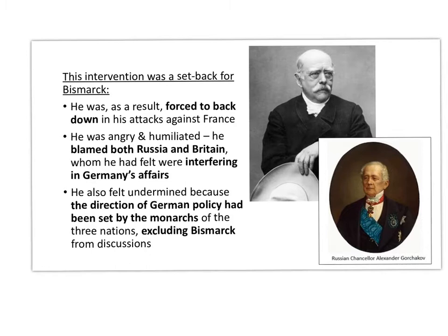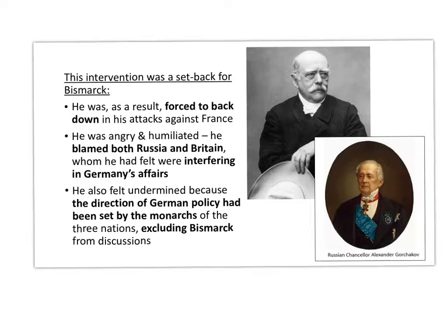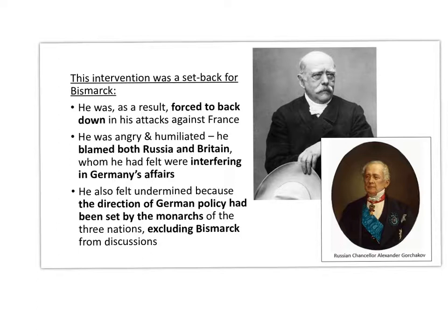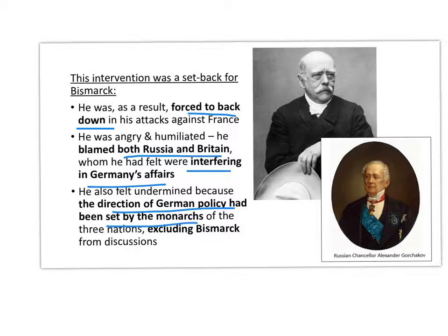Bismarck was furious, angry, and humiliated — he had been bypassed. The crisis was resolved, although France did continue to build up her army, but it was a big setback for Bismarck. He was forced to back down in his attacks against the French because his own emperor, the Queen of Britain, and the Emperor of Russia had stepped in to restore the peace. He blamed both Russia and Britain for interfering in Germany's affairs. He felt undermined because the direction of German policy was now being set by the monarchs, not by himself, leaving him feeling very demoted.